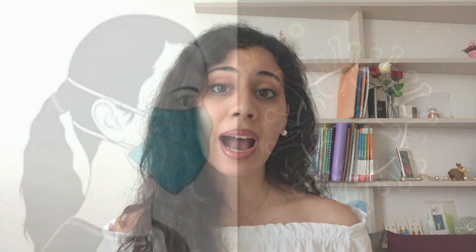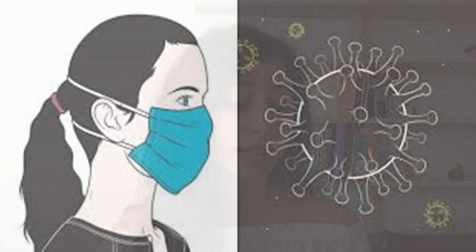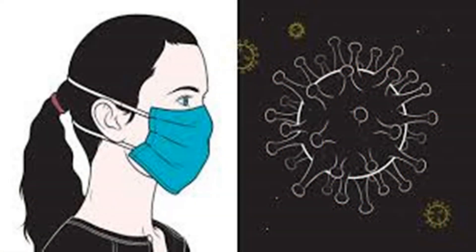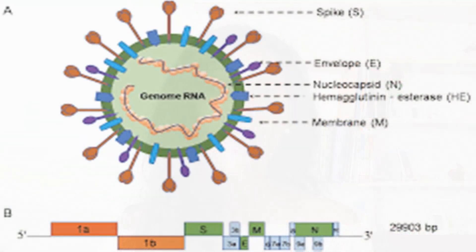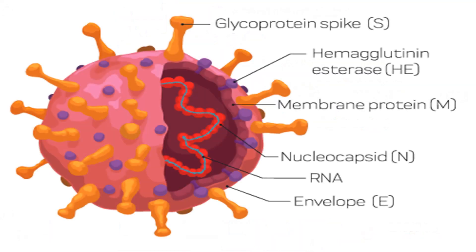Coronaviruses are widespread in humans and cause respiratory, enteric, hepatic, and neurologic diseases. They are positive-stranded RNA viruses with a crown-like appearance under the microscope, due to the presence of the spike glycoproteins on the envelope.